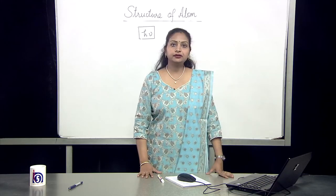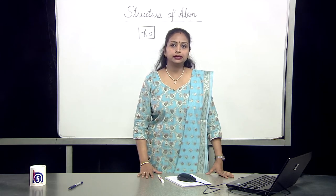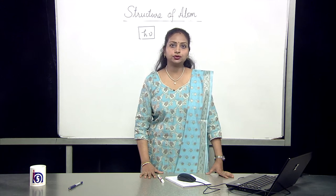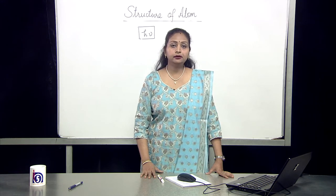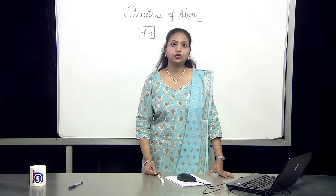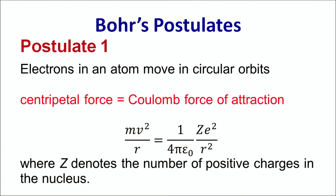In the previous lecture, we studied Bohr's atomic model and got familiar with the four postulates. From the first postulate, we know that the electron revolves around the nucleus in circular orbits. When it revolves, the centripetal force is equal to the Coulomb force of attraction, as we have already studied.